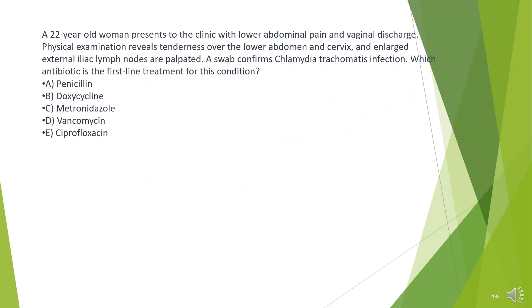A 22-year-old woman presents to the clinic with lower abdominal pain and vaginal discharge. Physical examination reveals tenderness over the lower abdomen and cervix, and enlarged external iliac lymph nodes are palpated. A swab confirms Chlamydia trachomatis infection. Which antibiotic is the first-line treatment for this condition?